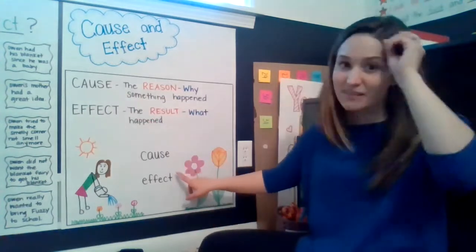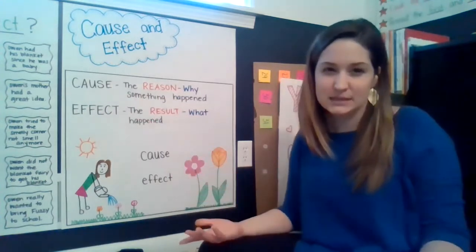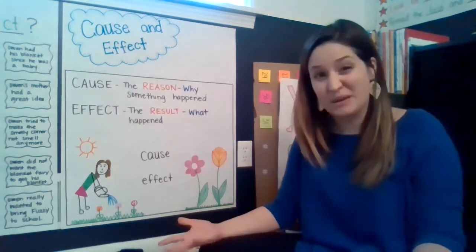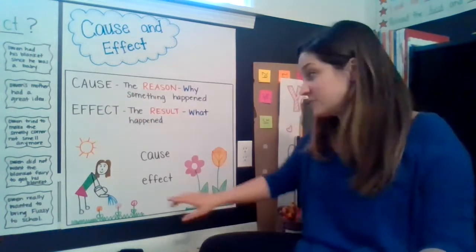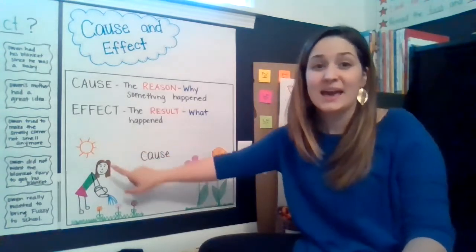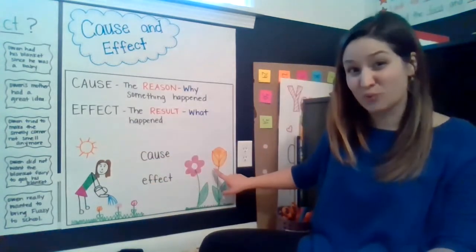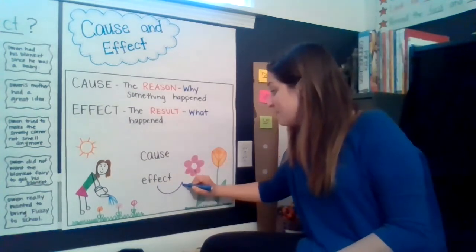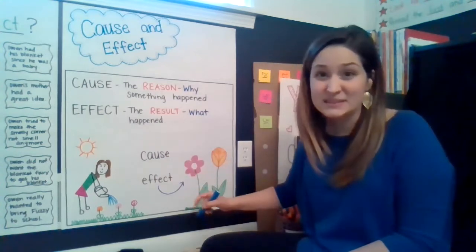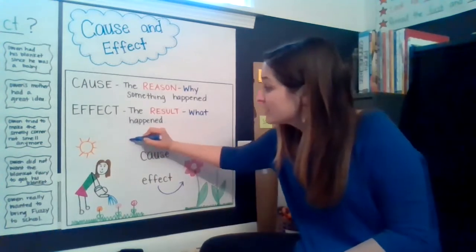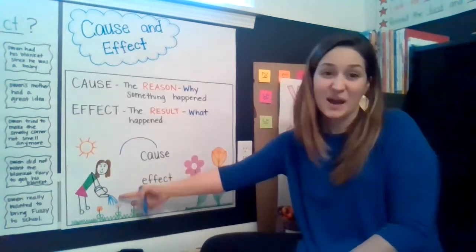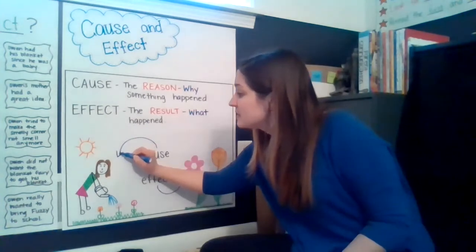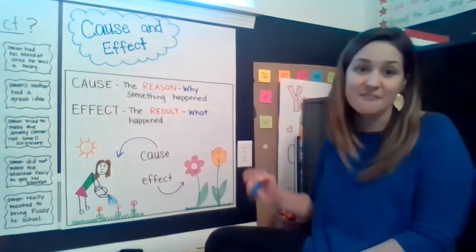I want to show you a picture to think about this idea a little bit more. When I start a garden, all my flowers are really, really small — maybe they're just little buds — but I have to water them and give a lot of sunlight. And then the effect is that they grow. The reason that my flowers grow is because I watered them and because the sun was out. So this cause results in this effect.